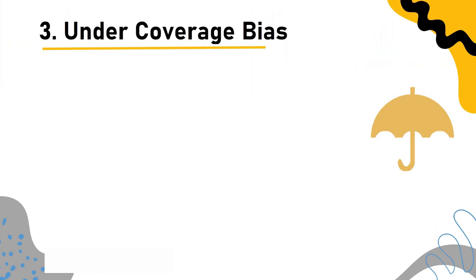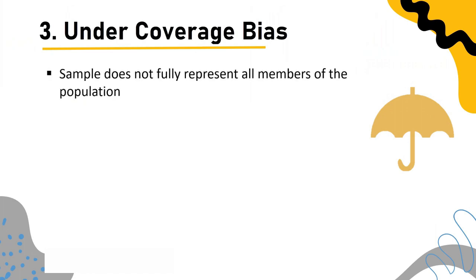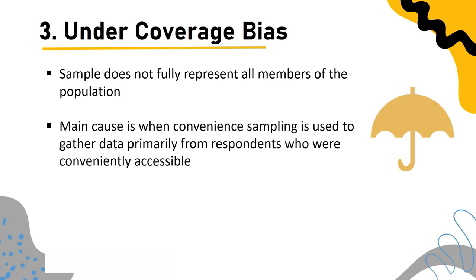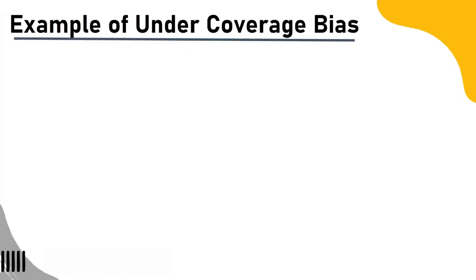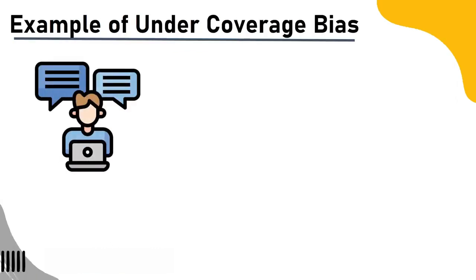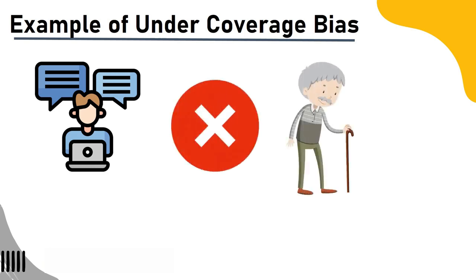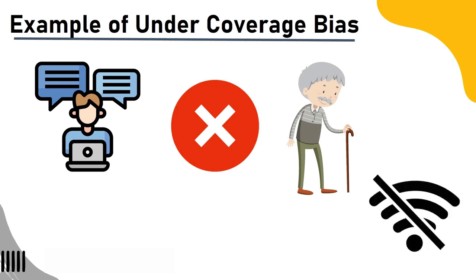Under-coverage bias: The sample does not fully represent all members of the population. The main cause is when convenient sampling is used to gather data primarily from respondents who were conveniently accessible. Example: Online nationwide surveys may not reach populations like the elderly and lower-income households that have restricted internet access.